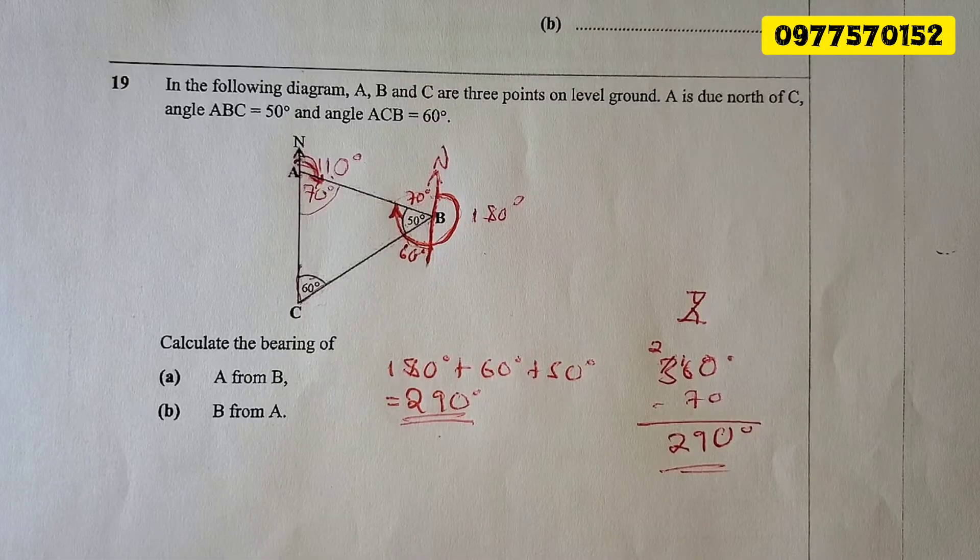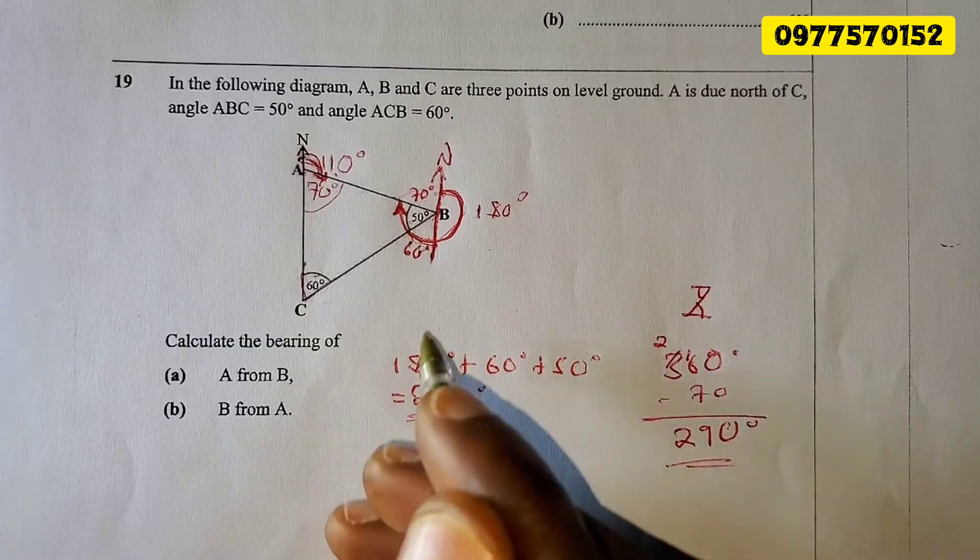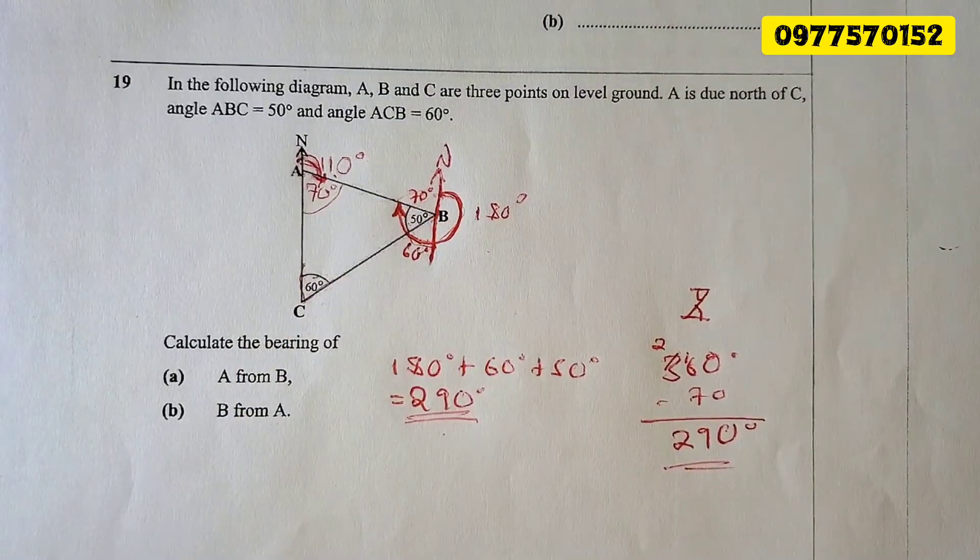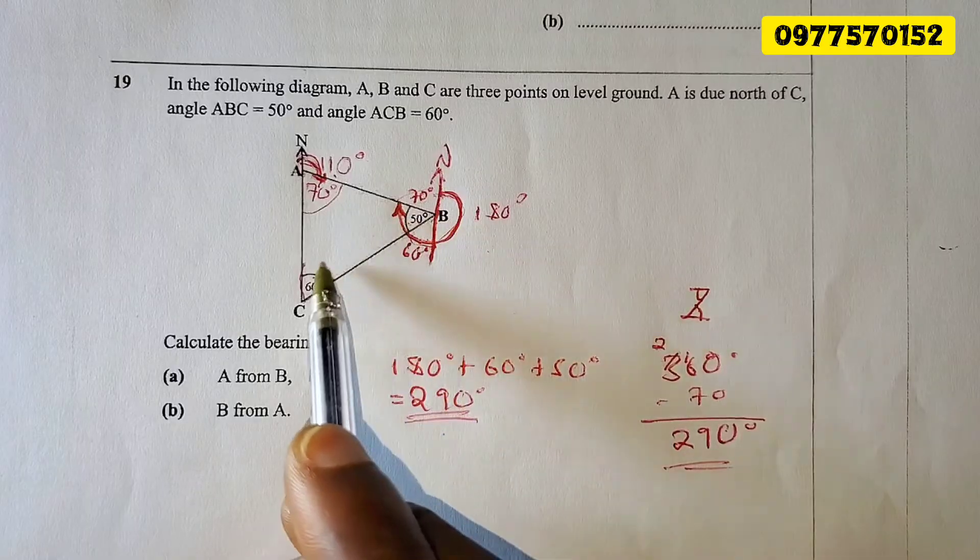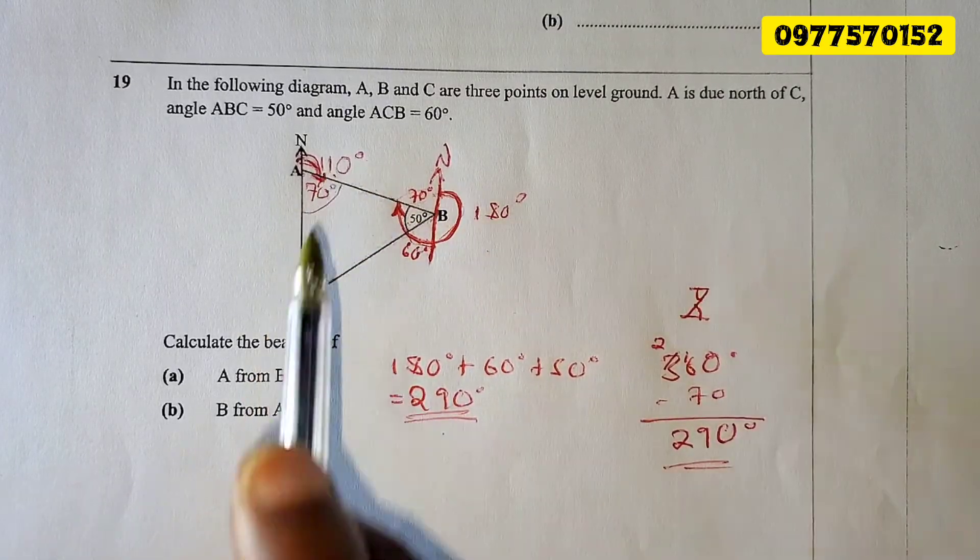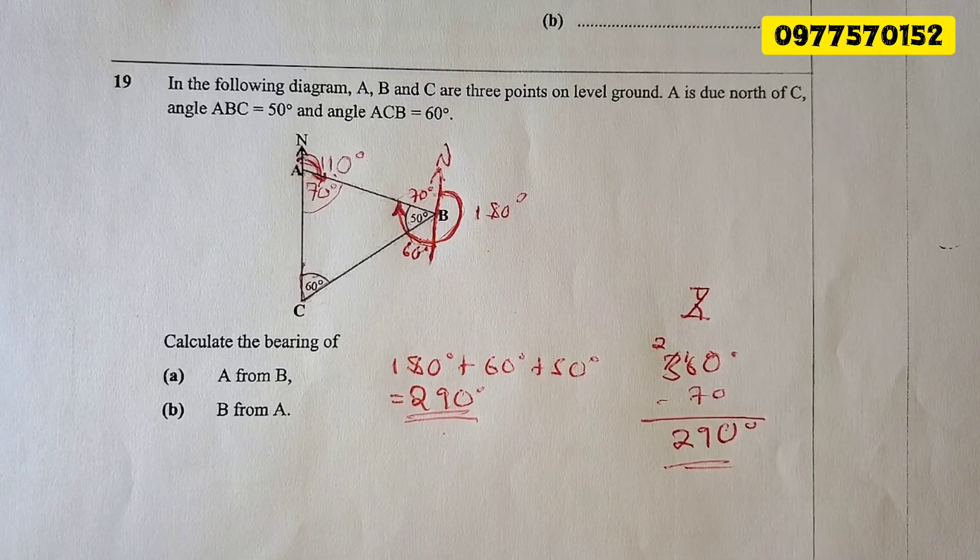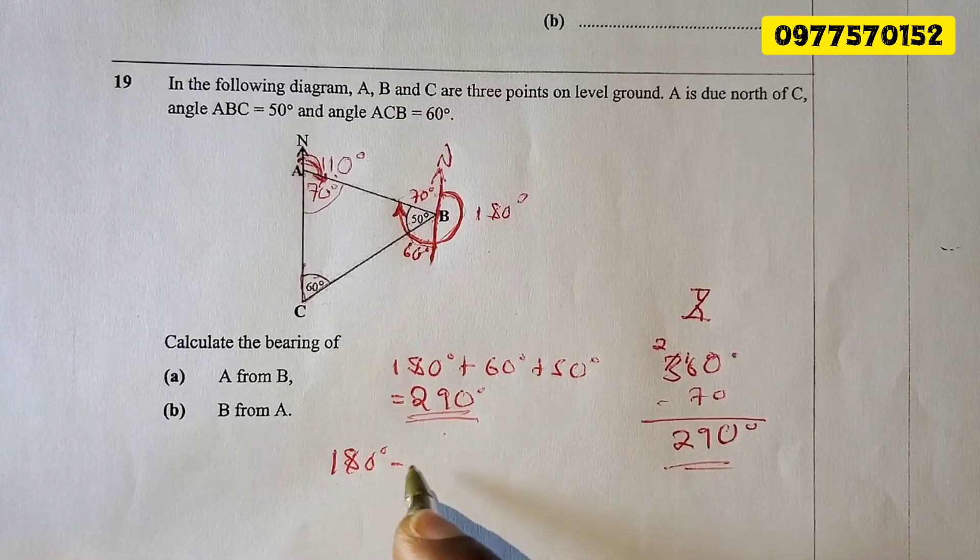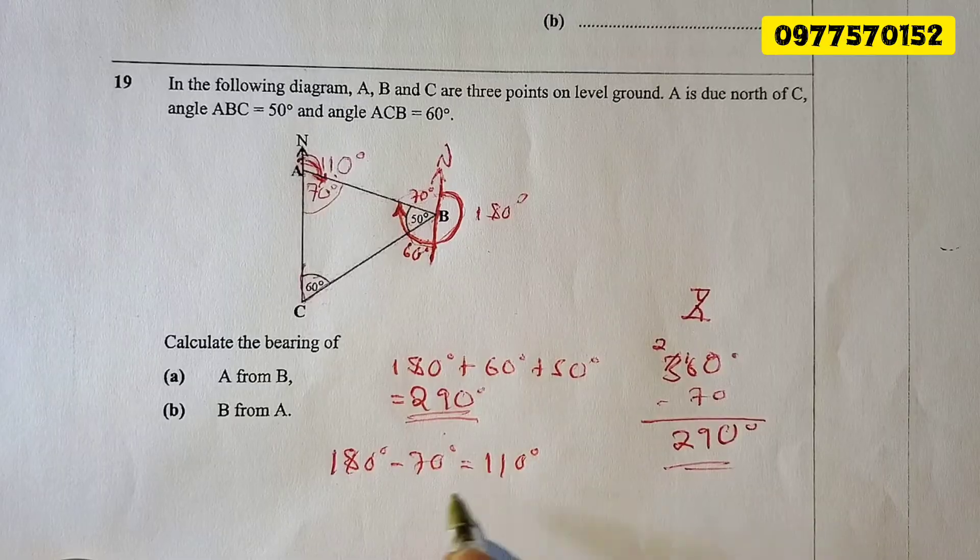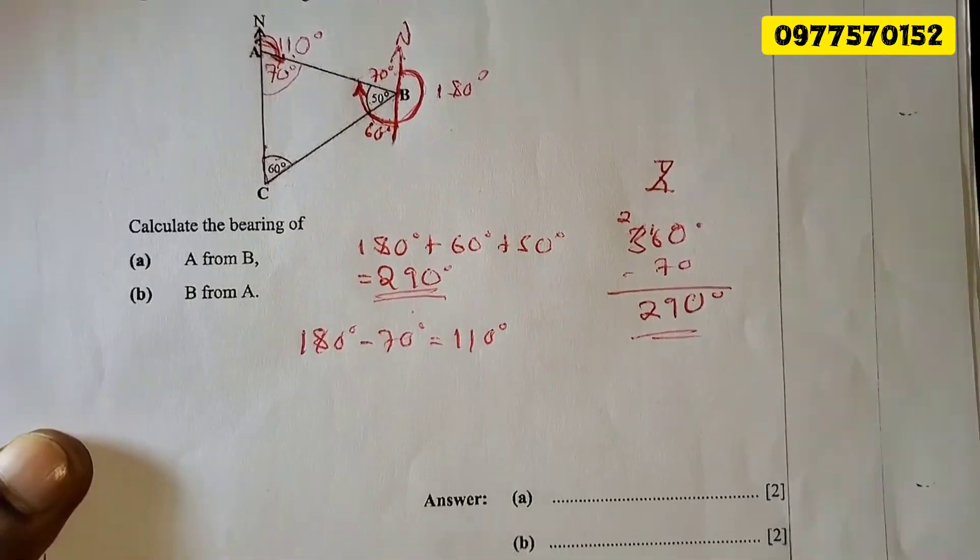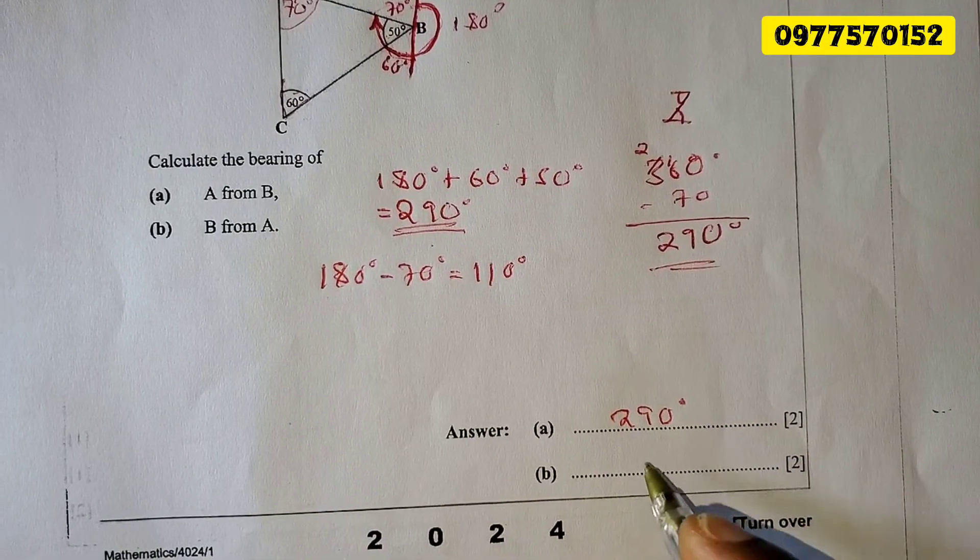You should show how you found 110. This is how you can write it. You can say 50 plus 60 equals 110. Or you can calculate, you can find the value of this angle here then subtract from 180. You still find 110. So let me just say 180 degrees minus 70 degrees, and the answer is 110 degrees. Therefore, here we're going to write the final answer: 290 degrees for part A, and here is 110 degrees. This is how simple bearings are.